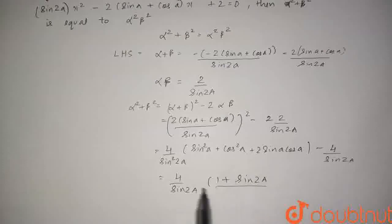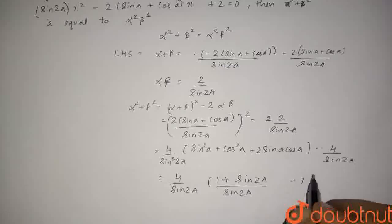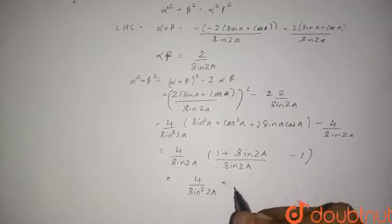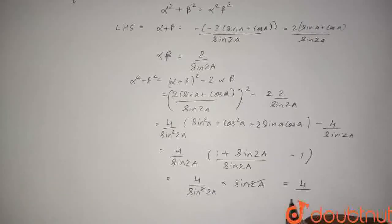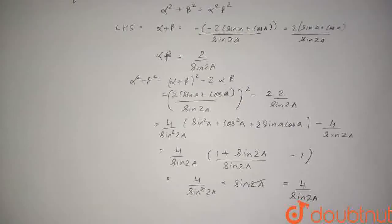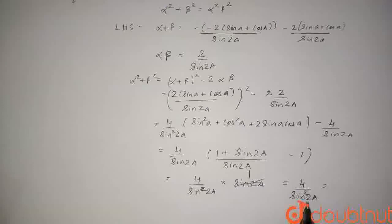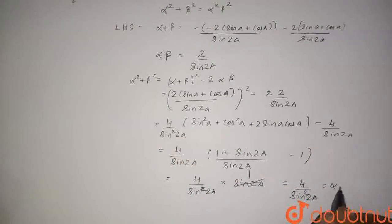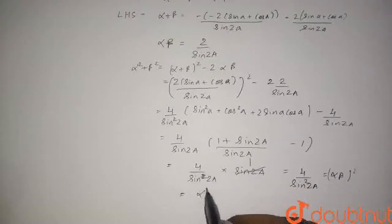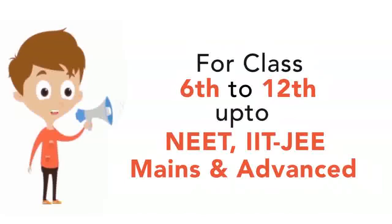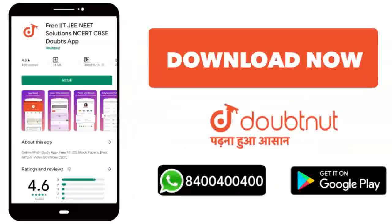Upon sin(2a), minus 1. So therefore, we finally get 4 upon sin²(2a), where one sin(2a) cancels, leaving 4 upon sin(2a). This is basically 4 upon sin²(2a), which equals (2 upon sin(2a)) whole squared, which equals (alpha times beta) whole squared, which equals alpha squared times beta squared — that is the RHS. Hence proved. Thank you.